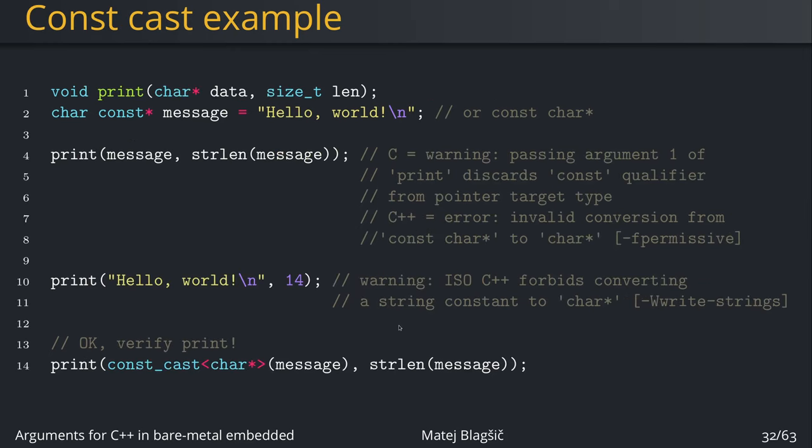And the last one is the const_cast. In this case, it's a similar example. We have a function called print that prints a char pointer data of size length. We again have a char const pointer to a string literal called hello world, and we try to print it. In C we only get a warning, but at least we get something, saying passing argument one of print discards const qualifier from pointer target type. We're disqualifying the constness of the input argument because the function doesn't have it.